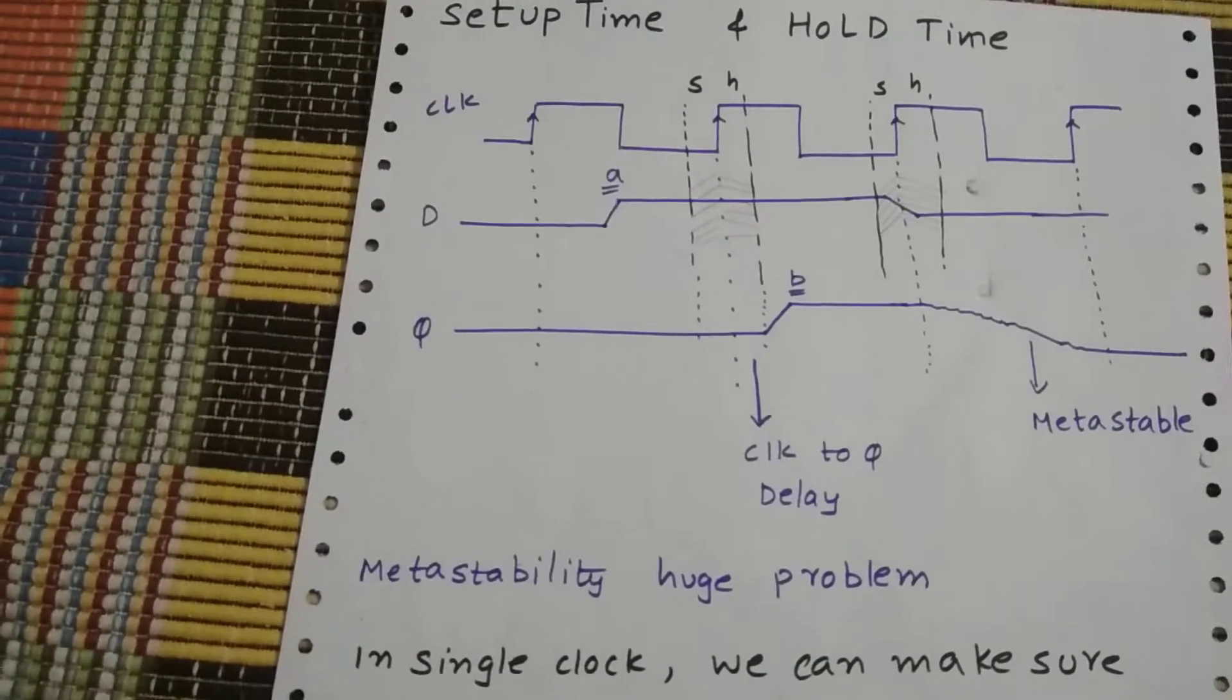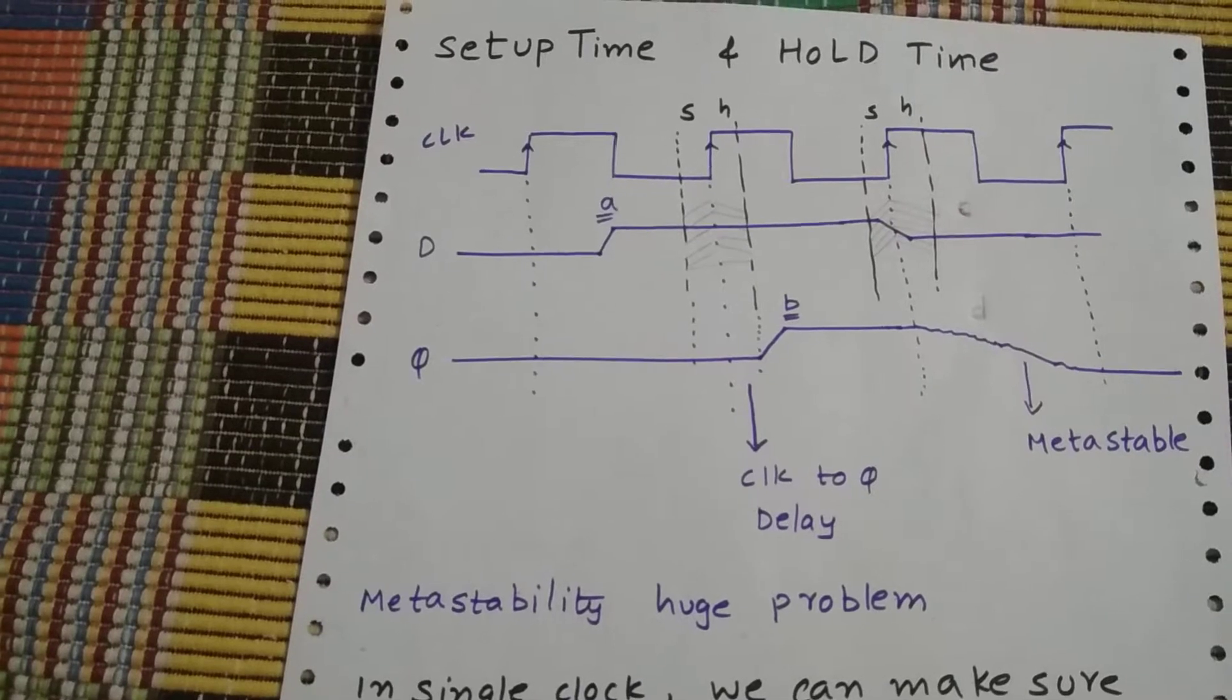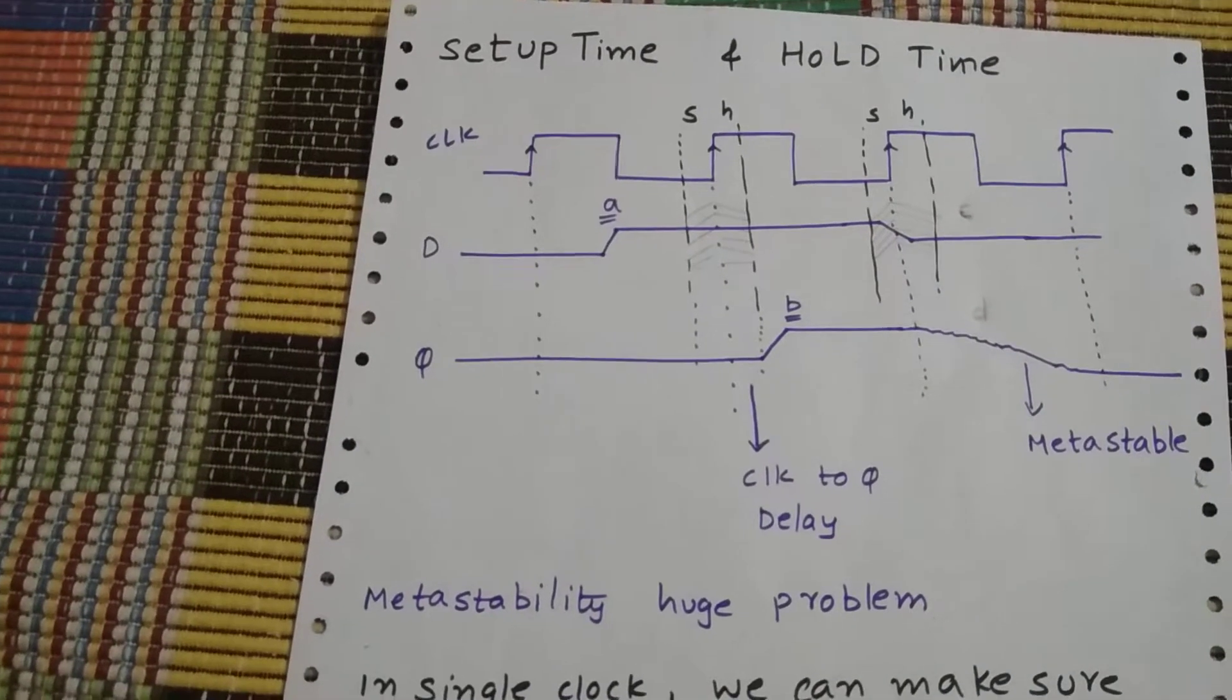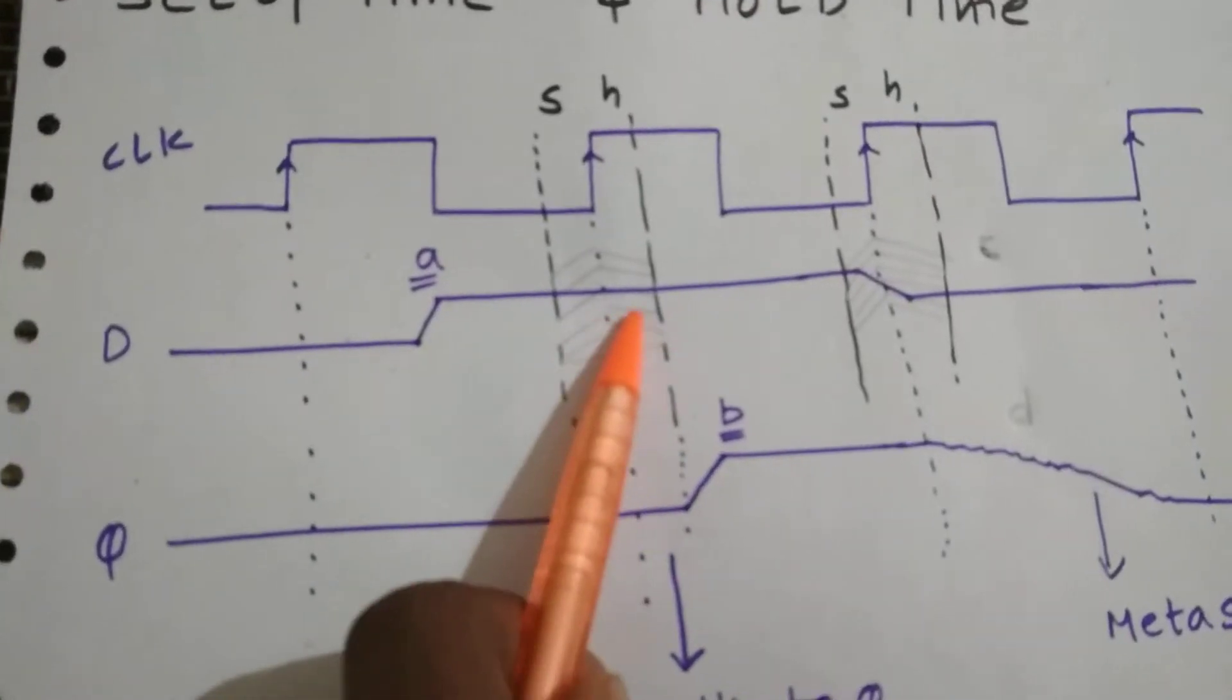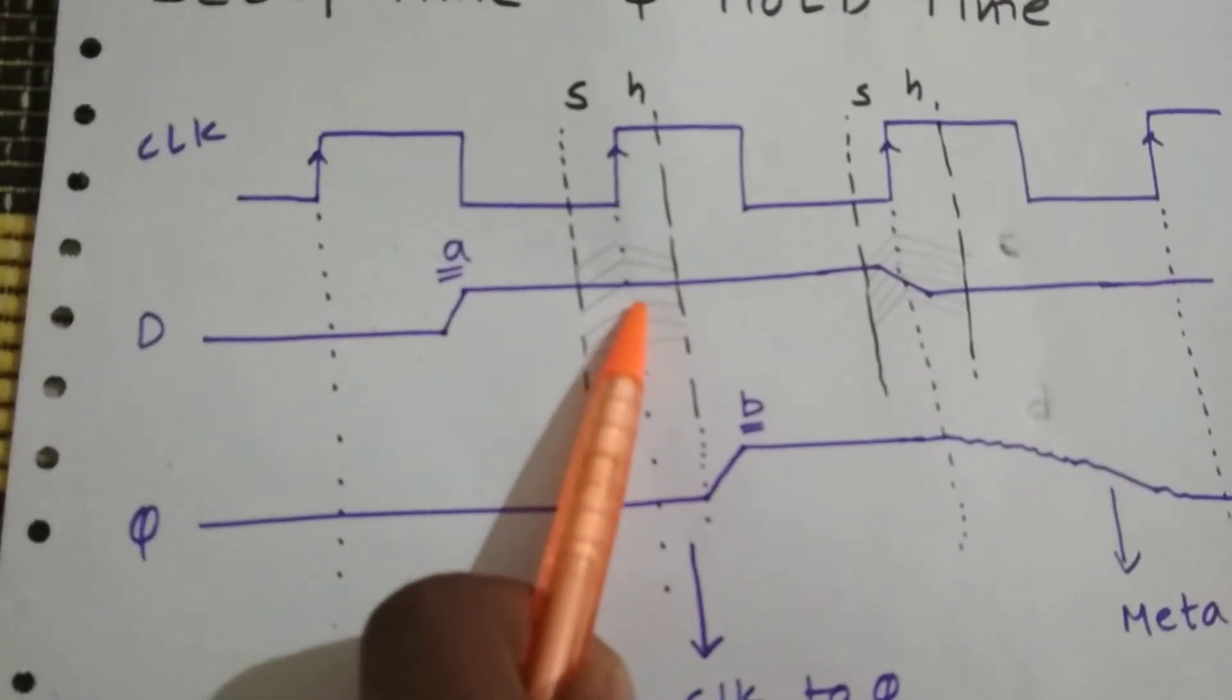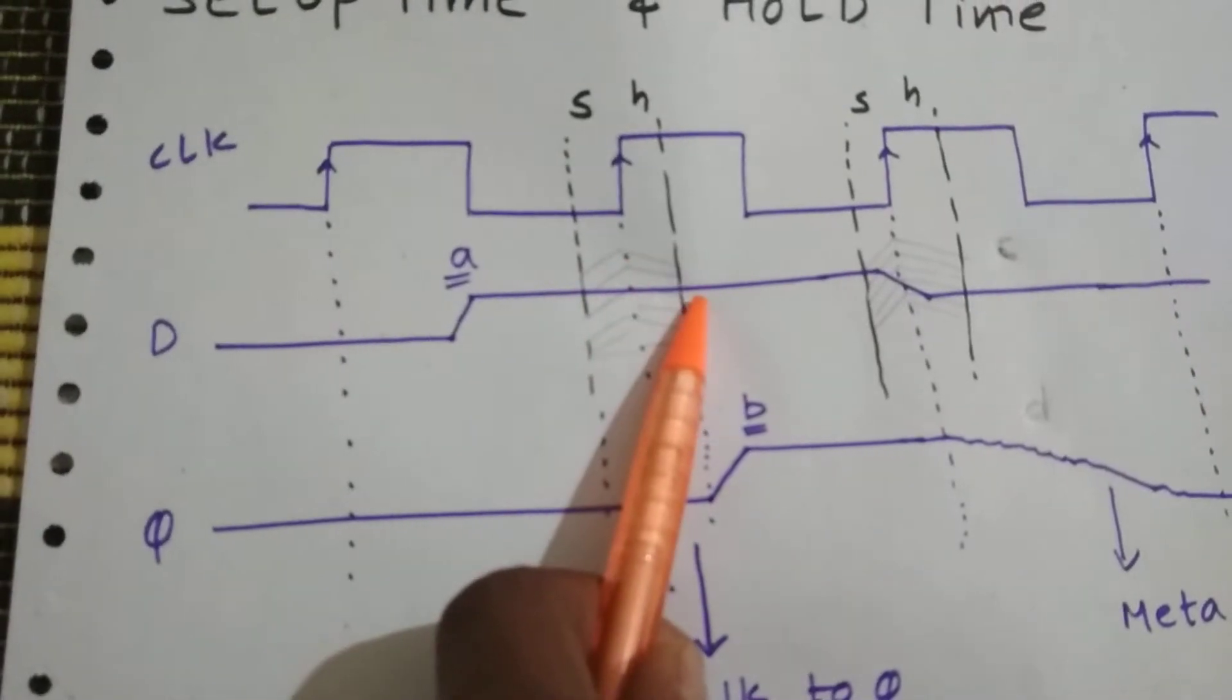And what's the hold time? After the rising edge of clock, the input is not allowed to change for a certain period of time. So this is the hold window. In this period, the input should not change after the rising edge of clock.